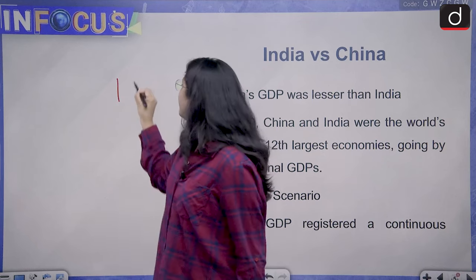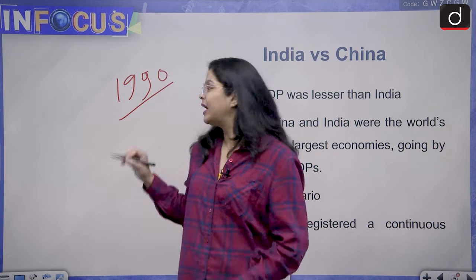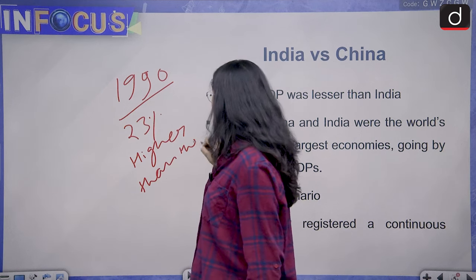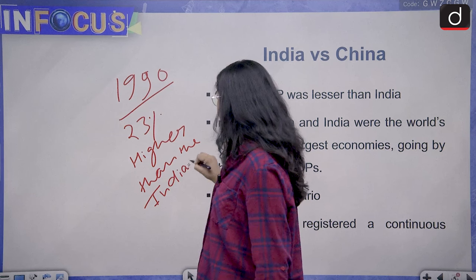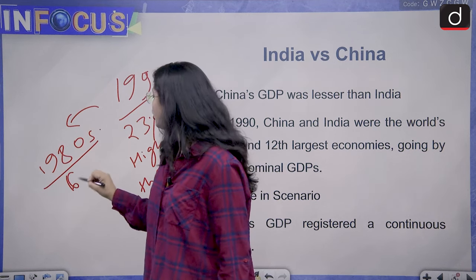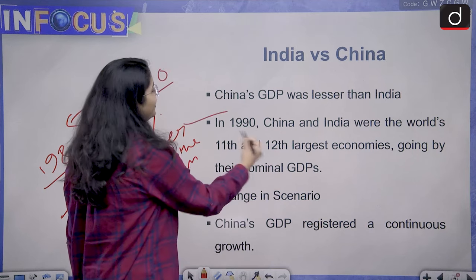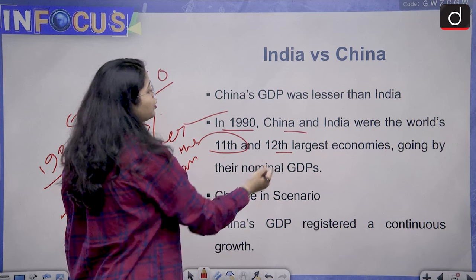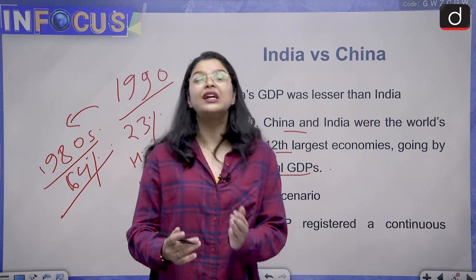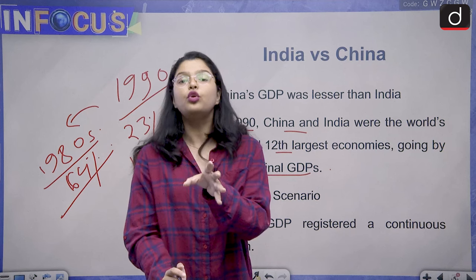As I have mentioned, till the year 1990, the Chinese economy was not as huge as it is now. It was just 23 percent higher than the Indian economy. And if you talk about the decade of the 1980s, the Indian economy was actually huge — it was 64 percent higher than the Chinese economy. In 1990, China and India were the world's 11th and 12th largest economies going by their nominal GDPs. But the scenario changed in the favor of the Chinese economy, which then saw an unprecedented rate of growth.